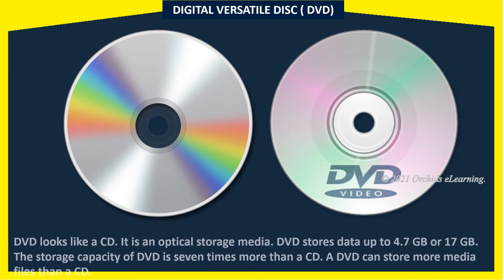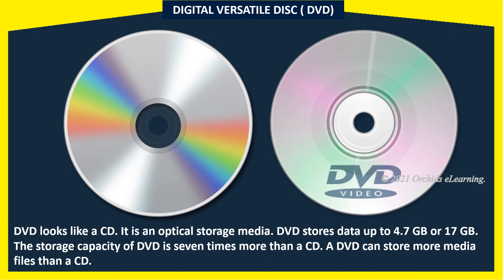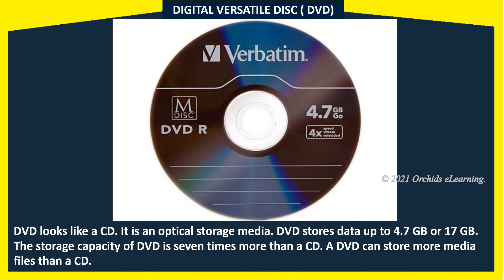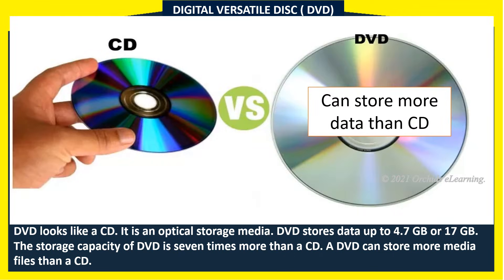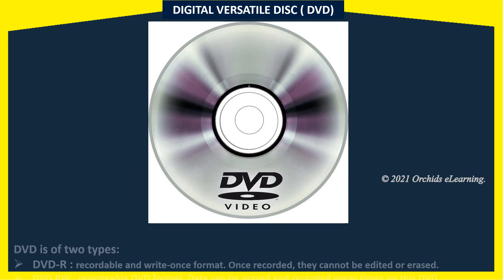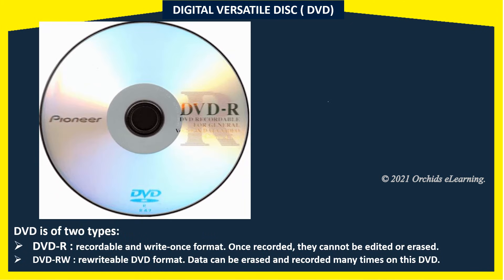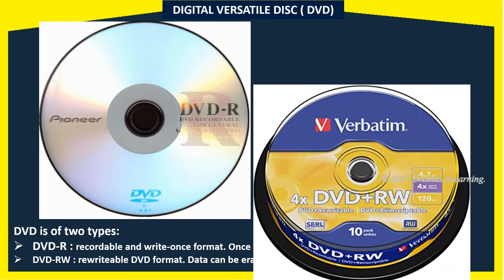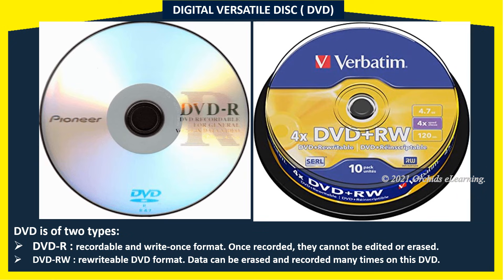A Digital Versatile Disk (DVD) looks like a CD and is an optical storage media. A DVD stores data up to 4.7 gigabytes or 17 gigabytes. The storage capacity of a DVD is 7 times more than a CD, so a DVD can store more media files than a CD. DVD is also of two types: DVD-R, which is recordable and write-once format (once recorded, they cannot be edited or erased), and DVD-RW, a rewritable DVD format where data can be erased and recorded many times.